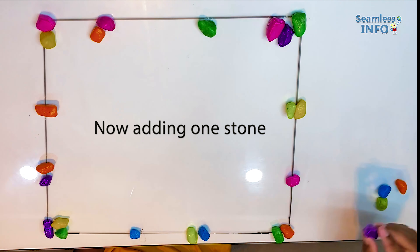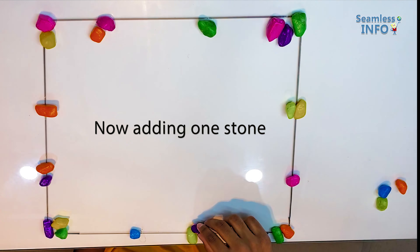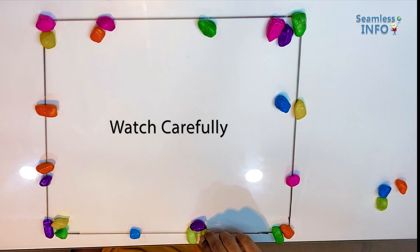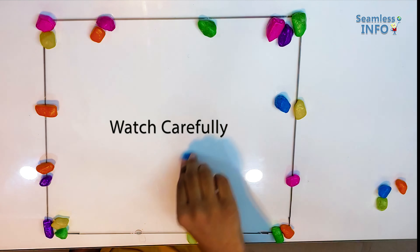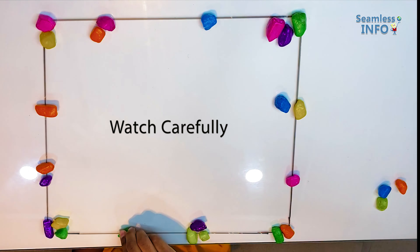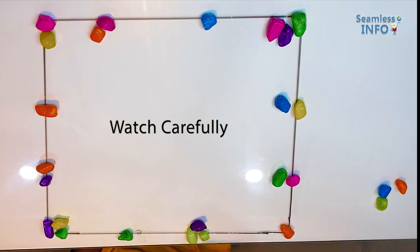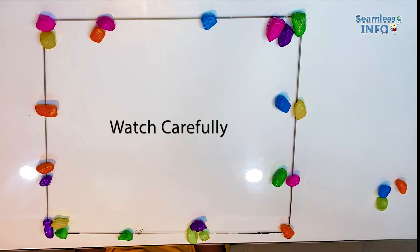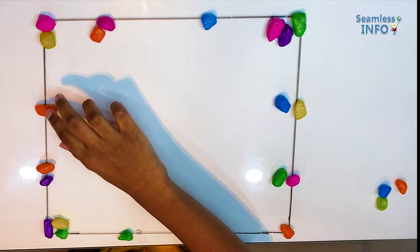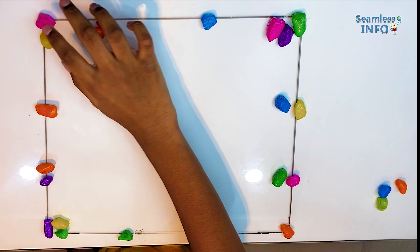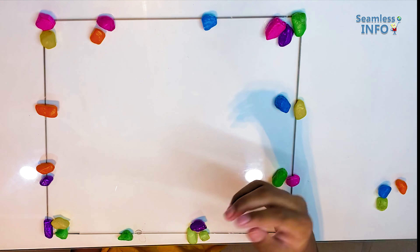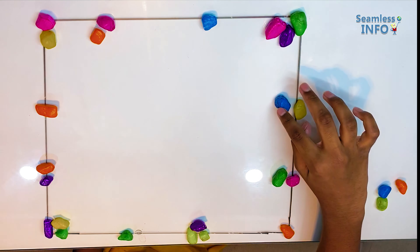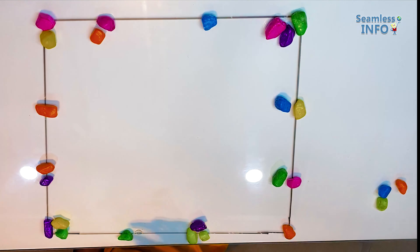Now I am going to add this purple stone here. And now I am going to move this blue stone here and this yellow stone here. Then I am going to take this blue stone here and this green stone here. And finally, I am going to move this stone here. Now let's count how many stones are there in each side. On the left side we have 1, 2, 3, 4, 5, 6, 7, 8. On the top side we have 1, 2, 3, 4, 5, 6, 7, 8. On the right side we have 1, 2, 3, 4, 5, 6, 7, 8. And on the bottom side we have 1, 2, 3, 4, 5, 6, 7, 8.